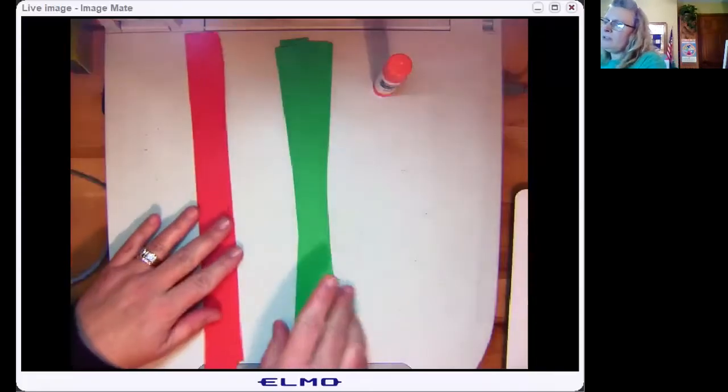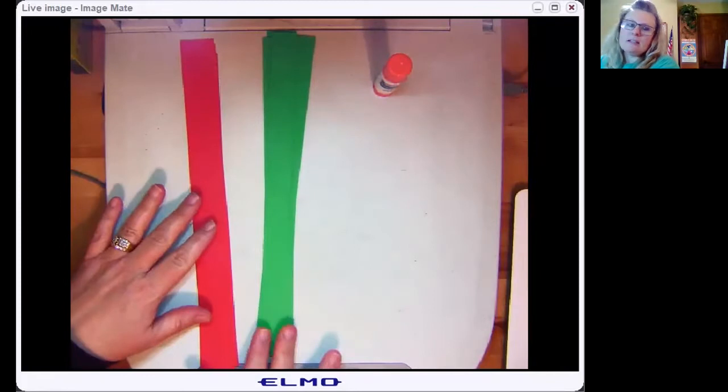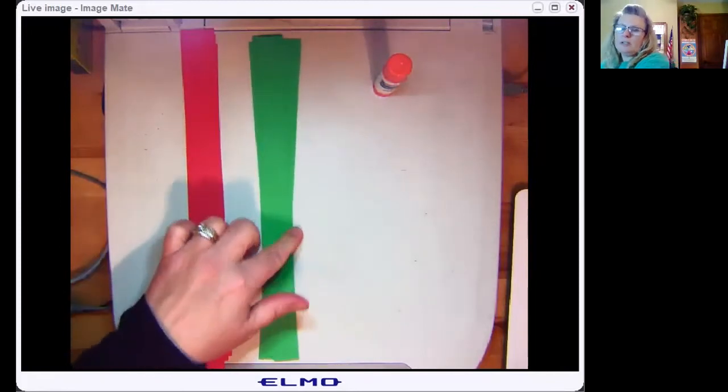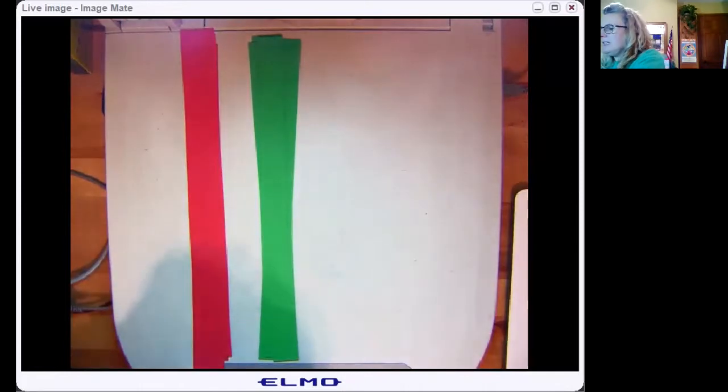All right, so that was Molly. And today you guys are going to make a paper chain. So I'm going to share my screen real quick here. I'm going to show you how to do it. All right, so the materials you need were found in that brown paper bag. There's six red strips, six green strips, and you're going to need your glue stick. That's all you're going to need today.